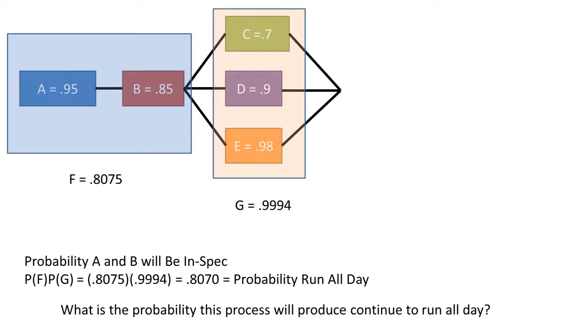For the final step, we can treat both of the probability subprocesses' probabilities as if they are in series. We can multiply the probabilities together. And we get a probability of 80.7%, which means there's an 80.7% chance the process will run all day.